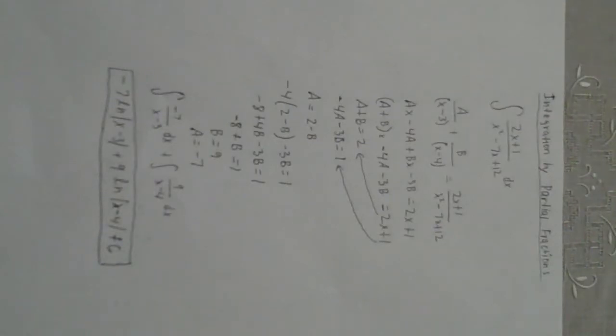First you need to separate it using a and b and factor the bottom. a over x minus 3 plus b over x minus 4 equals 2x plus 1 over x squared minus 7x plus 12.